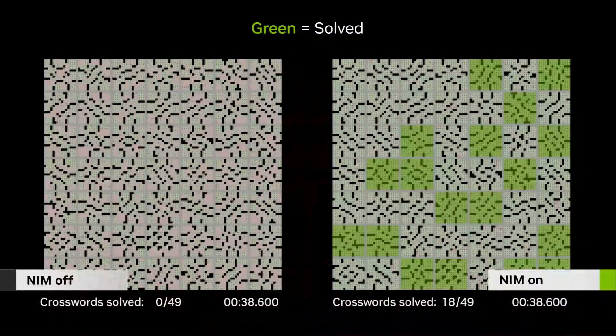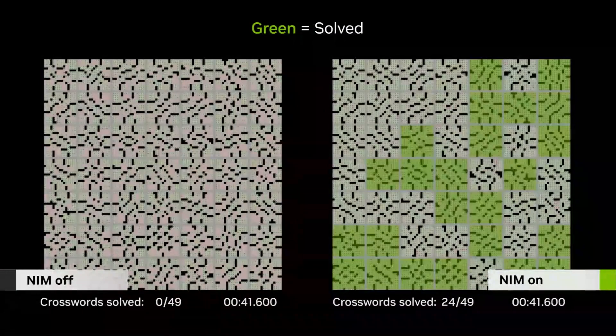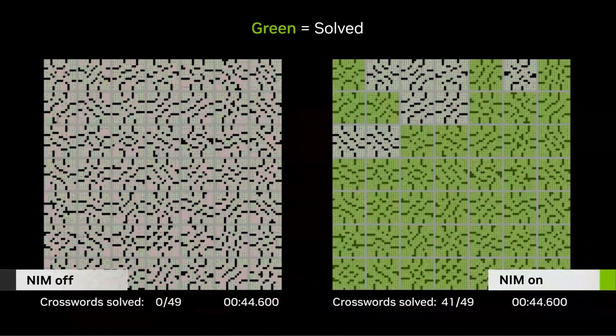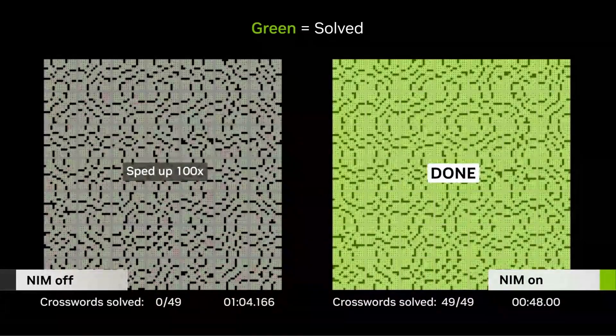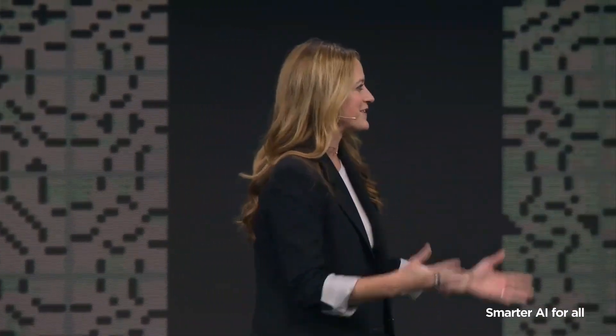On the left side we have NIM off, versus NIM on on the right side. You can see as it starts to complete crossword puzzles, it starts to light up green. Crossword puzzles are inherently very complicated tasks — we have an input sequence length of 2,000, output sequence length of 100 tokens, and we're doing 150 LLM calls per crossword puzzle. It's pretty evident that NIM on is completing faster and better than the leading open source software solutions.